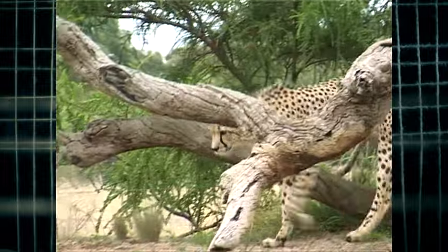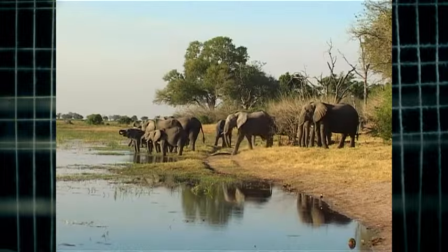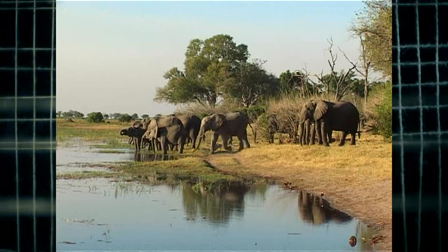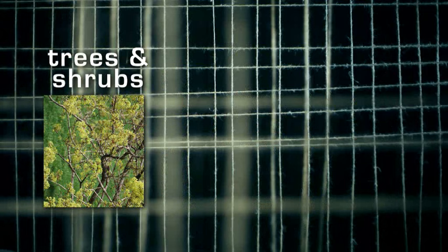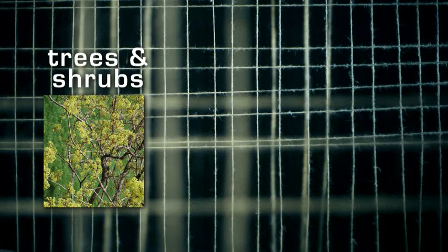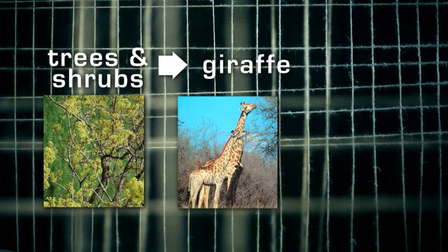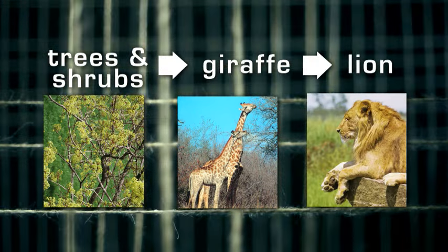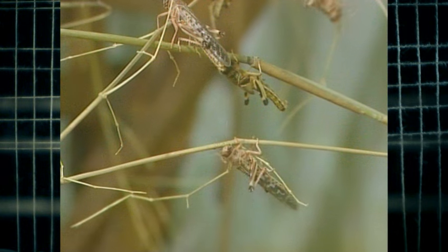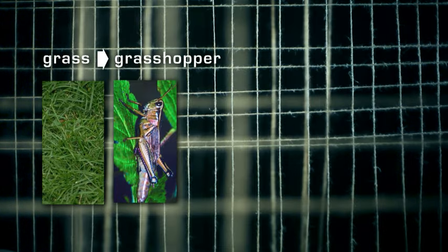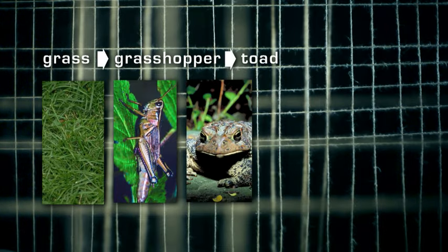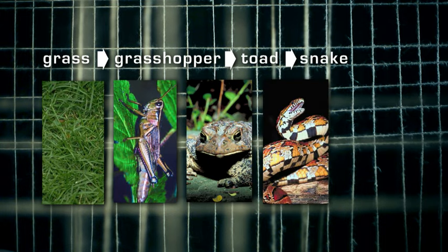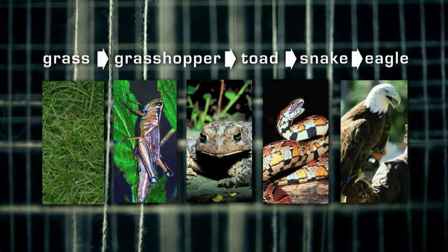Food chains can be drawn for both land and marine environments. For example, on land, trees and shrubs are eaten by a juvenile giraffe which is then eaten by a lion. Grass is eaten by a grasshopper. The grasshopper is eaten by a toad which, in turn, is eaten by a snake that's then eaten by an eagle.